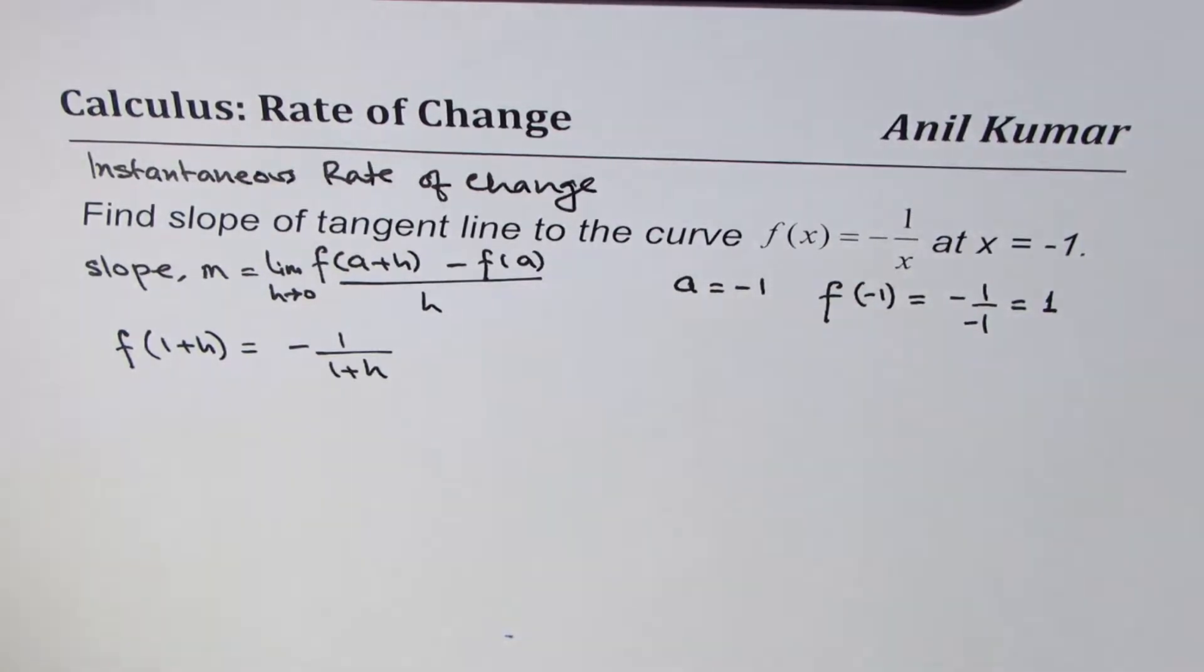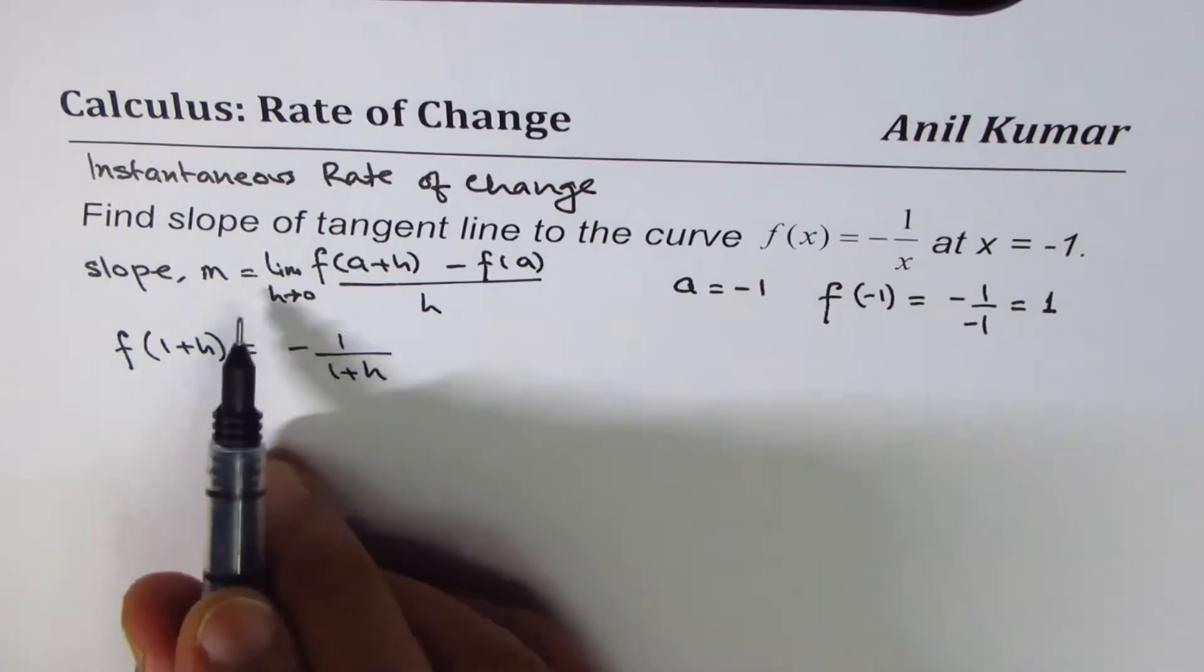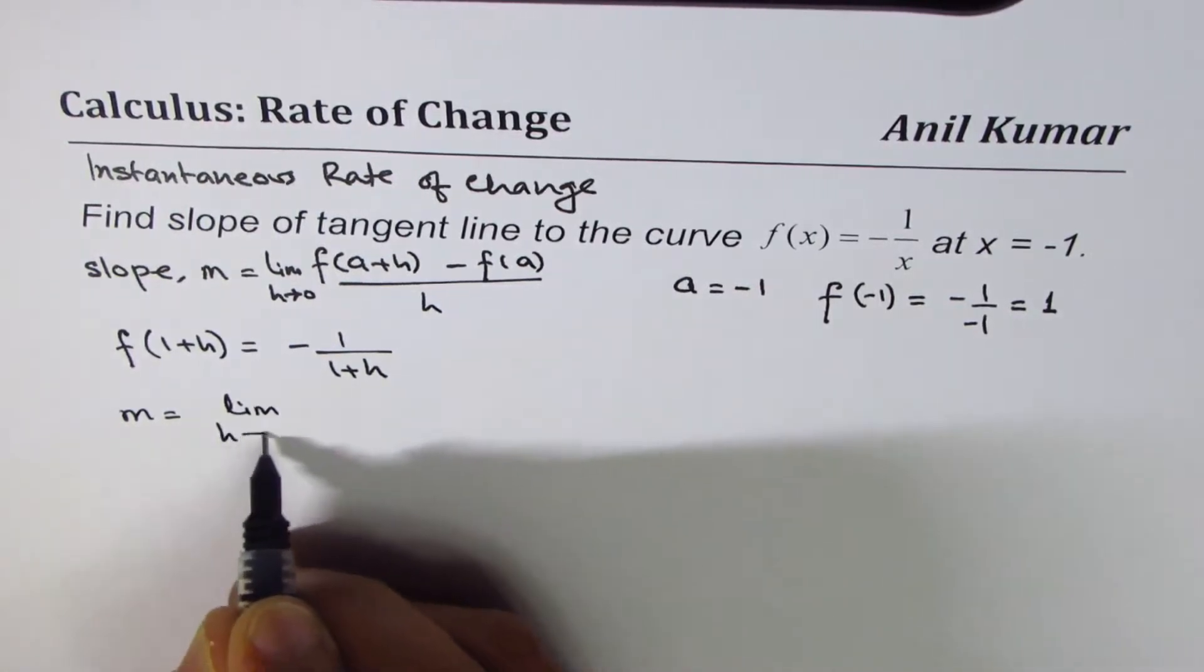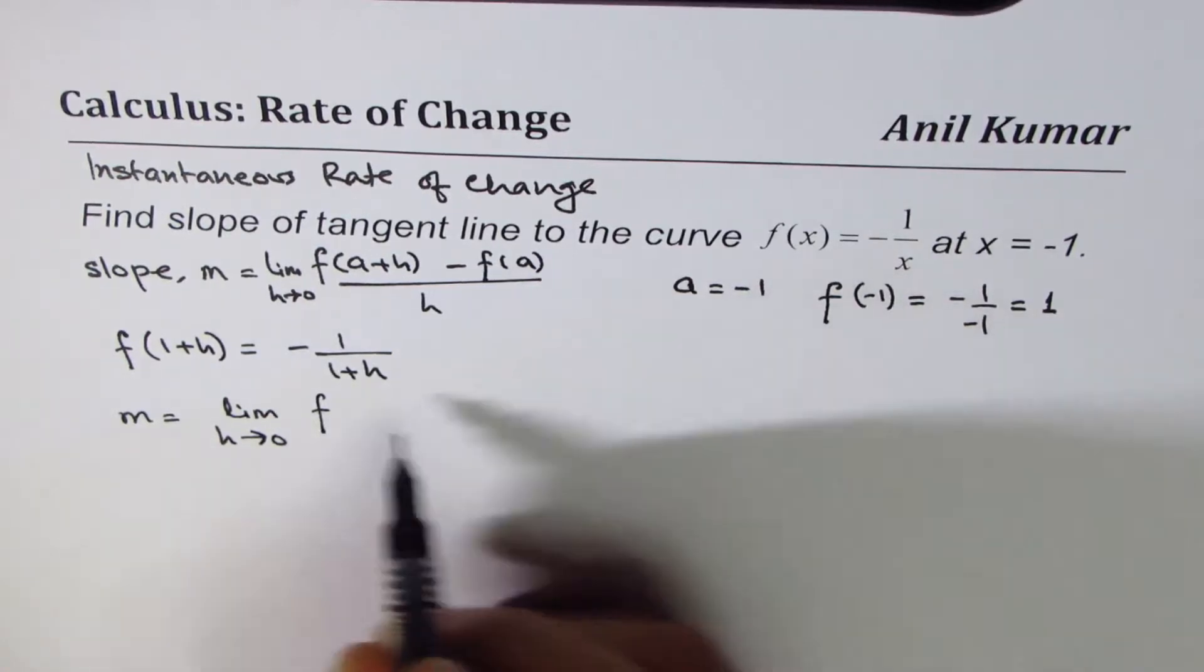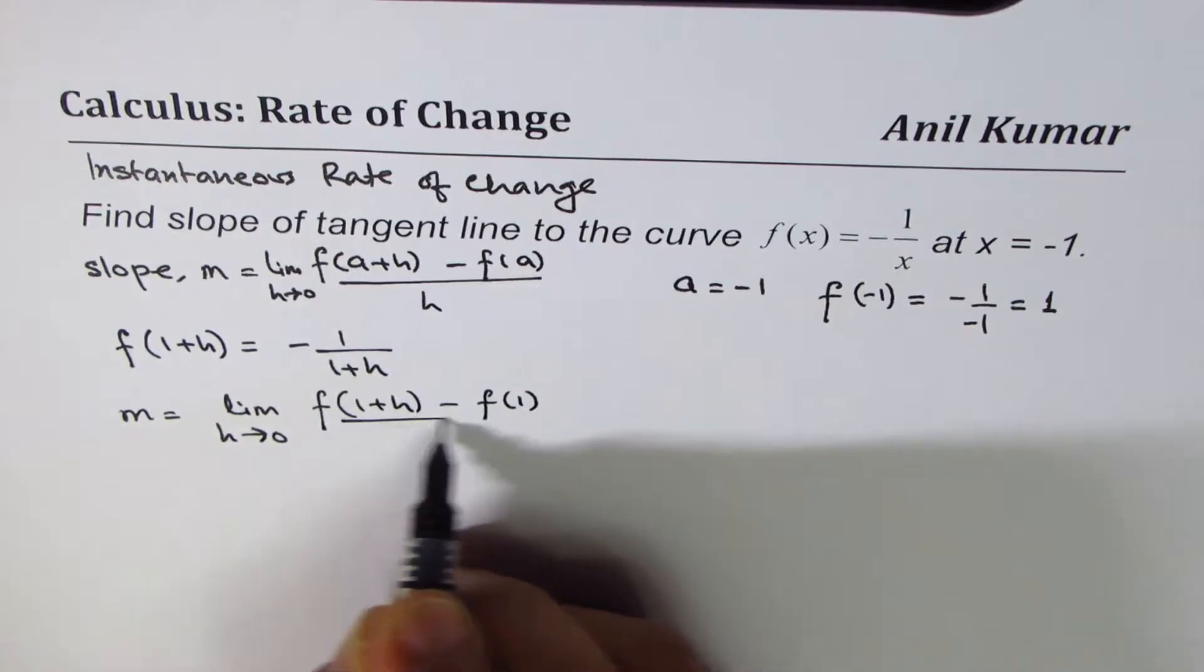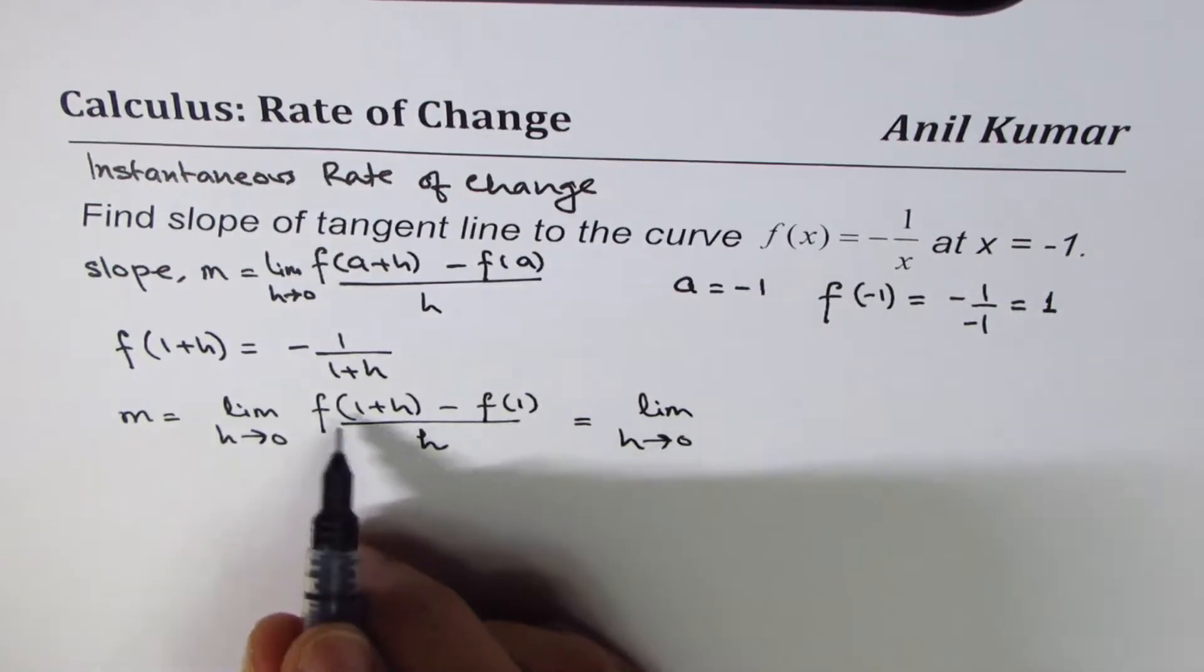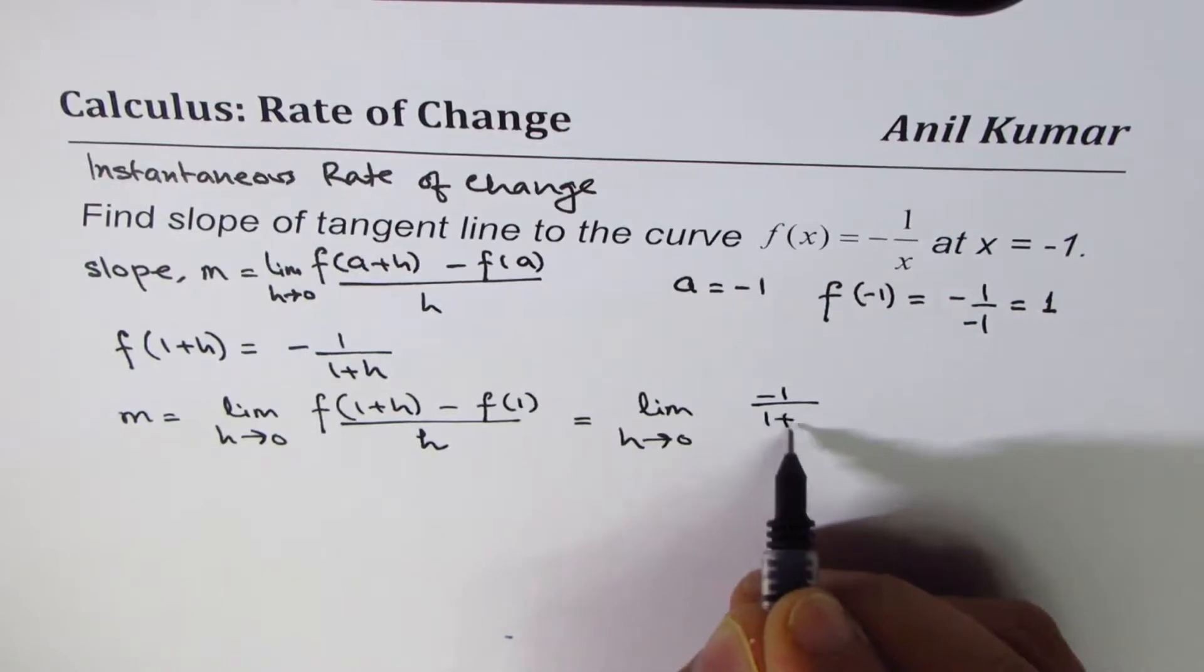which is slope of tangent line at a point. So f(-1+h) is minus 1 over -1+h. So applying the formula, we get m as limit h approaches 0 for the given function f(-1+h) minus f(-1) divided by h. Now this could be written as limit h approaches 0. f(a+h), as I have shown here,